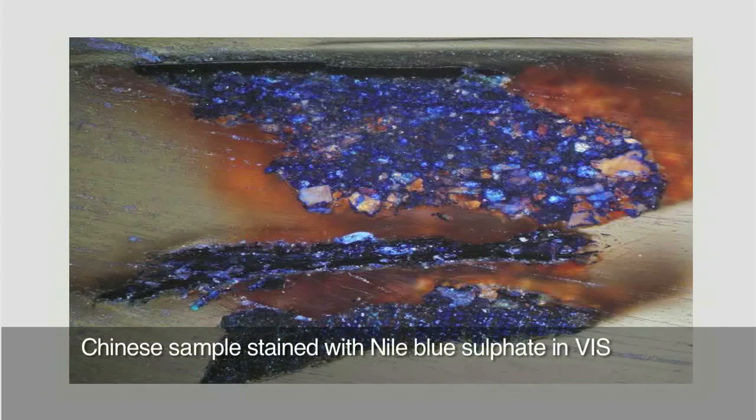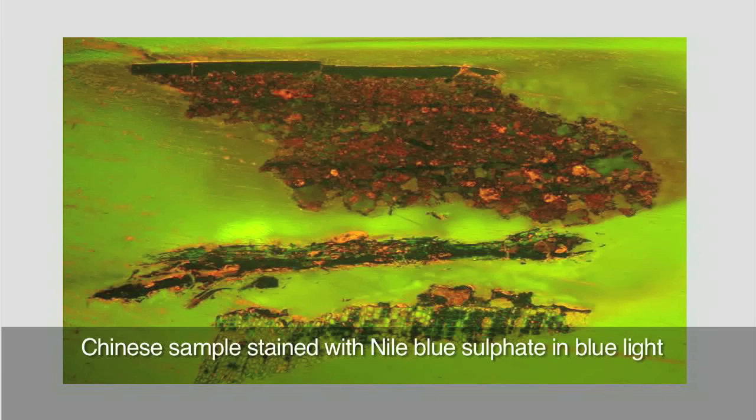The only disadvantage of Nile Blue is that it also colours proteins. Therefore, it can only give ambiguous results when used on its own. However, it is a very useful stain when used in combination with Amido Black and Sudan Black stains, because it can help support staining results achieved with the other methods.